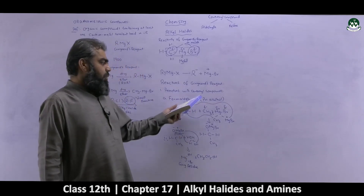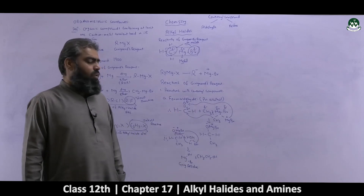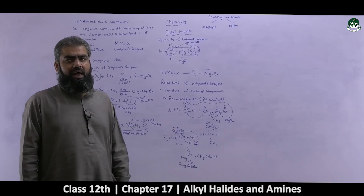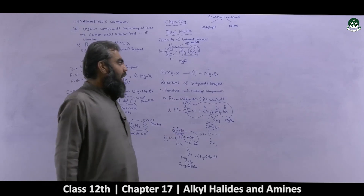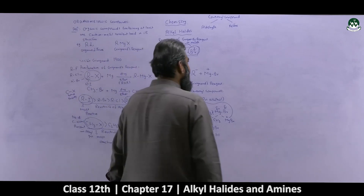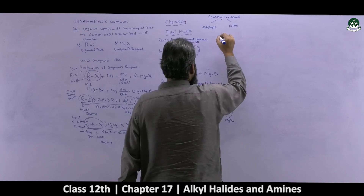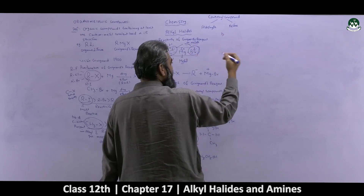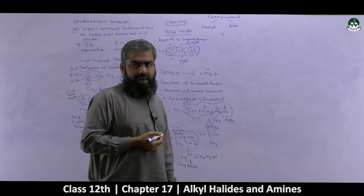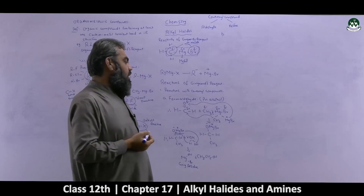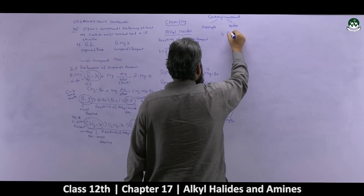So this is how you produce a primary alcohol by combining formaldehyde with a Grignard's reagent molecule. Now we come to the second important carbonyl compound: acetaldehyde, which is used for the preparation of a secondary alcohol molecule.